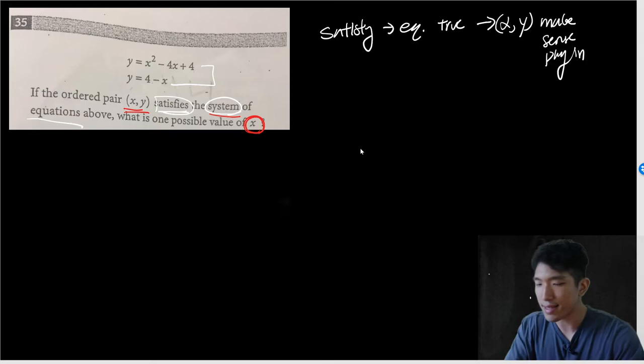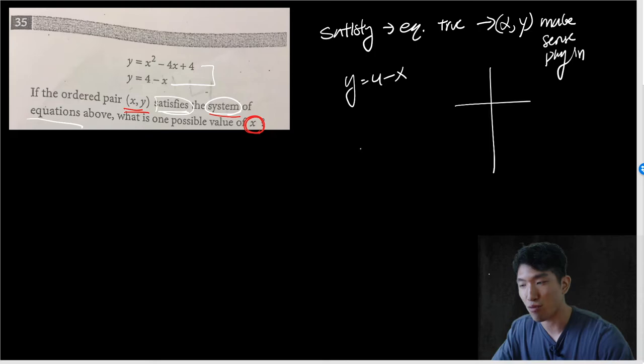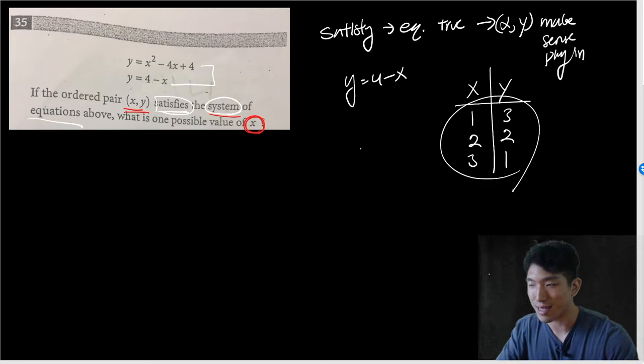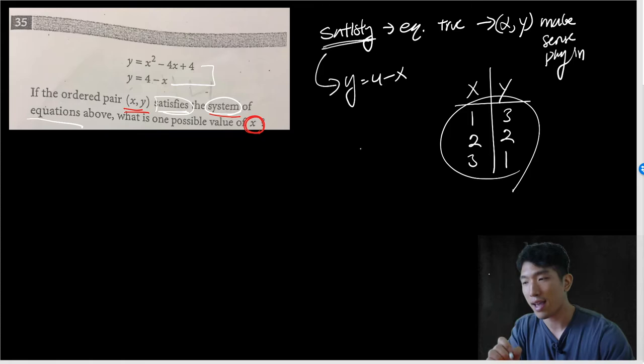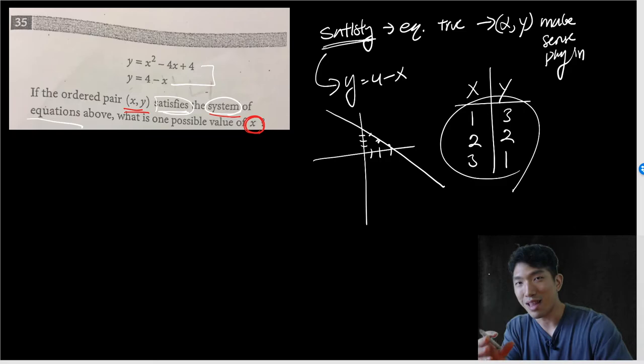For instance, let's say we have Y = 4 - X. We're trying to come up with points that make that equation true. Let's make a quick table: if X is 1, Y is 3; X is 2, Y is 2; X is 3, Y is 1 — and so on. These points are what makes the equation true, which means they satisfy this equation. When you plot them together, you get a line. So a graph is a collection of points that make the equation true, or satisfy the equation.